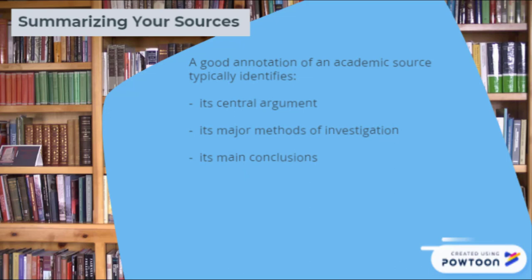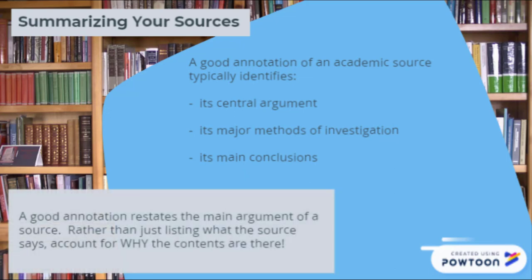A good annotation of an academic source typically identifies its central argument, its major methods of investigation, and its main conclusions. Keep in mind that identifying the argument of a source is a different task than describing or listing its contents. Rather than listing contents, make sure your annotation accounts for why the contents are there.